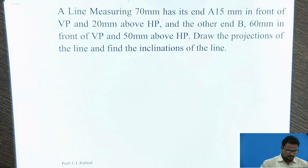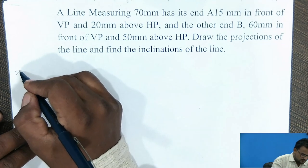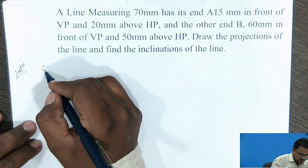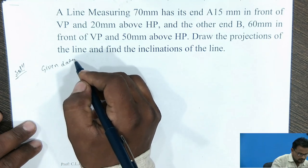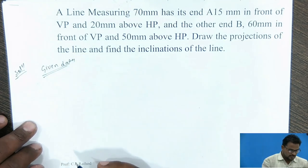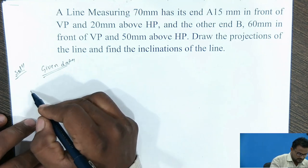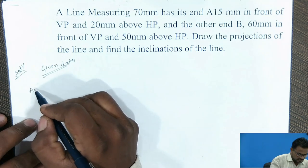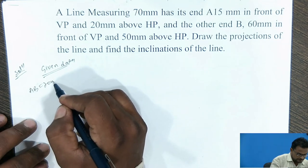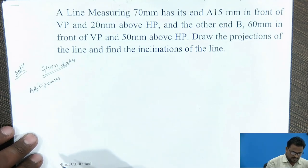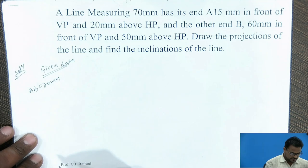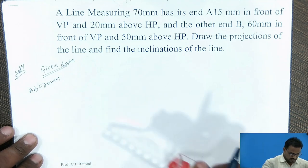Now I have to write down the given data. The line AB is given as 70 mm. Two different end conditions are given, and by taking those end distances, I have to draw the line.